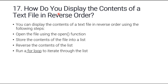Question number fifteen: how do you display the contents of a text file in reverse order? Step one: open the file using the `open()` function with file handling. Step two: store the content of the file into a list. Step three: reverse the list using the `reverse()` function. Step four: run a for loop to iterate through the list. Step five: use the `print()` method to print each line to the output.